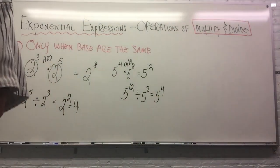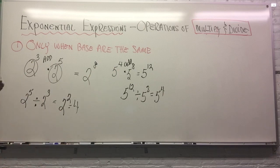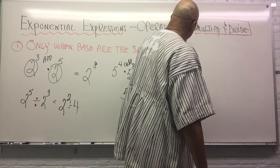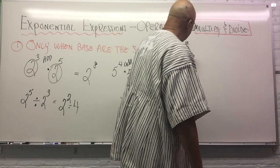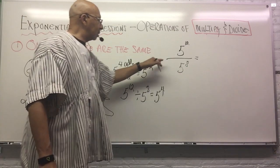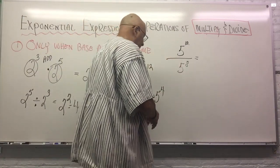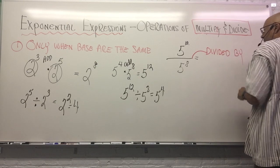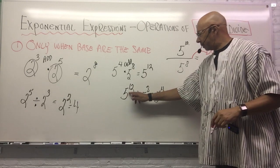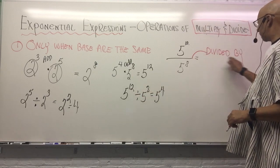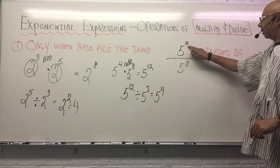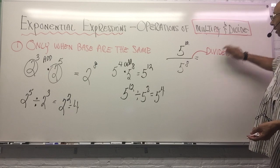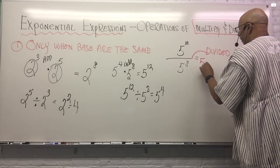We can also show division in other ways. I could show division like this: five to the twelfth power divided by five to the eighth power written as a fraction. That line means divided by. So here I have five to the twelfth power divided by five to the eighth power. The bases are both five, so I can do it. I subtract because division means subtract. Twelve take away eight is four, giving five to the fourth power.